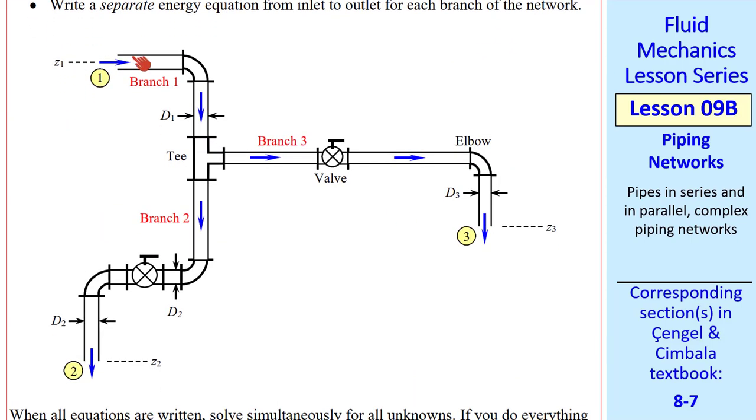Let's look at this example. Flow comes into branch 1 through a T to branch 2 and branch 3. There are minor losses through the elbows, the valves, and the T, and there are also major losses through these straight sections. Again, this is not to scale. The straight sections are usually quite long, and I drew flanged components here.